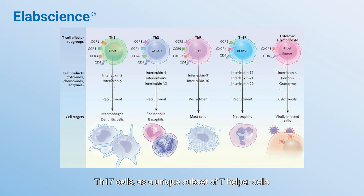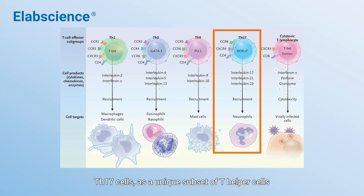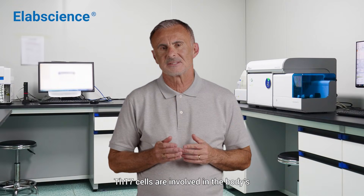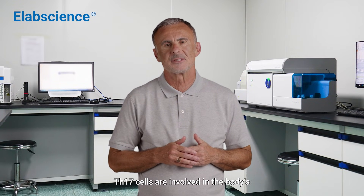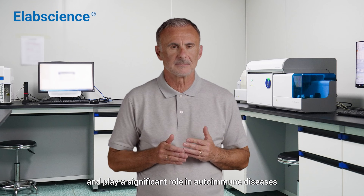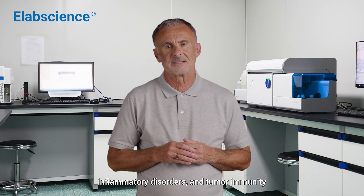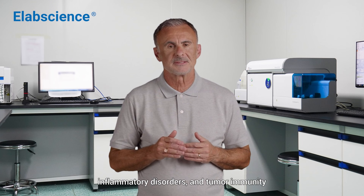TH17 cells, as a unique subset of T helper cells, primarily secrete cytokines such as interleukin-17. TH17 cells are involved in the body's defense responses against various pathogens and play a significant role in autoimmune diseases, inflammatory disorders, and tumor immunity.